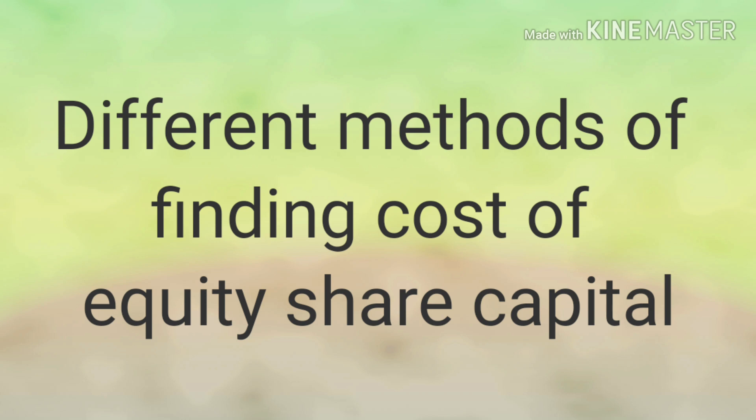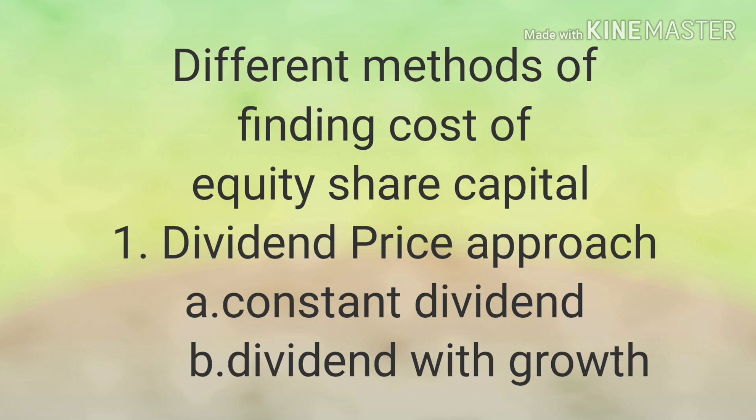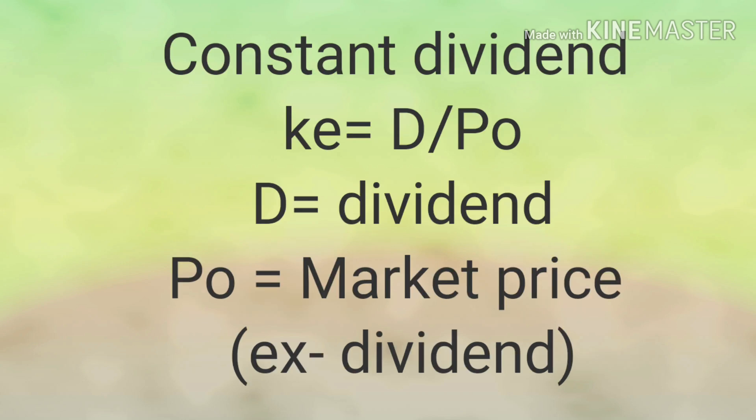Since the cost of equity capital represents the expectation of shareholders, many interpretations are possible, and there are different methods of finding it. The first is the Dividend Price Approach, under which the market price of a share is the present value of its future dividends. This has two approaches: constant dividend and growth. Under the constant dividend method, KE = D / P0, where D is the expected dividend and P0 is the market value of equity. Since it is a constant dividend, D0 and D1 are the same, so we use D in the formula.